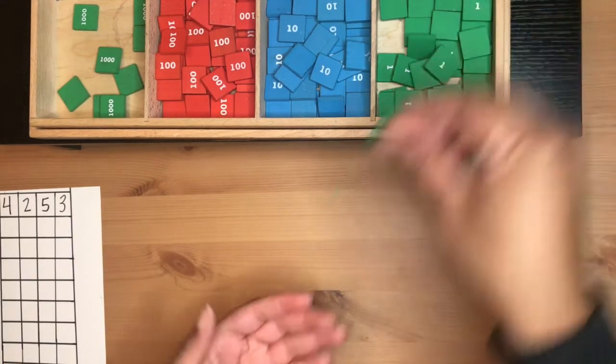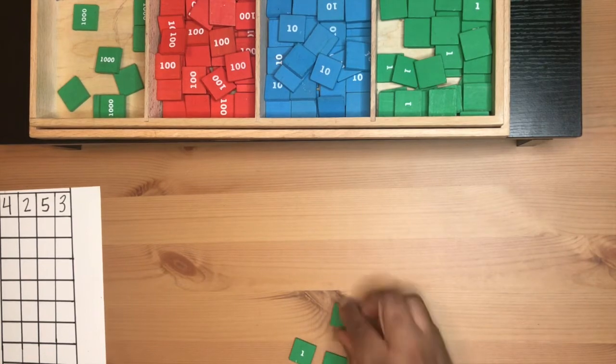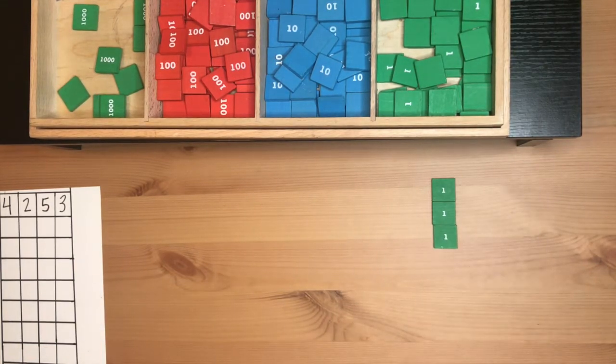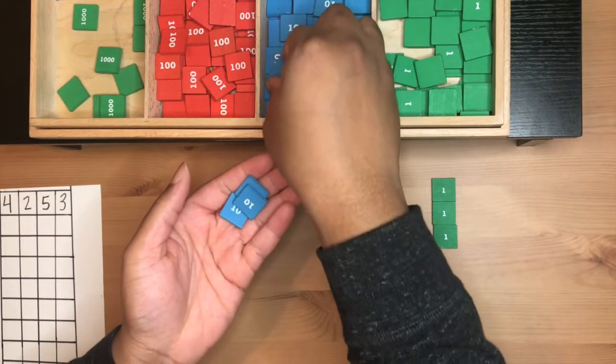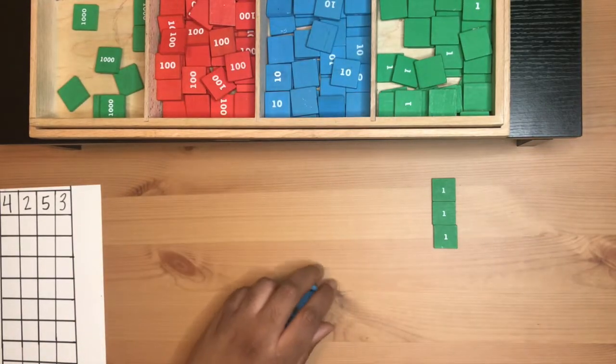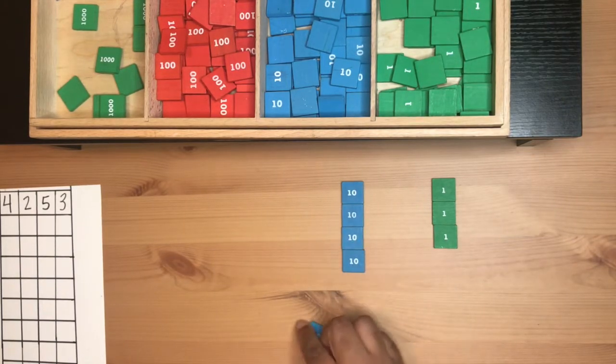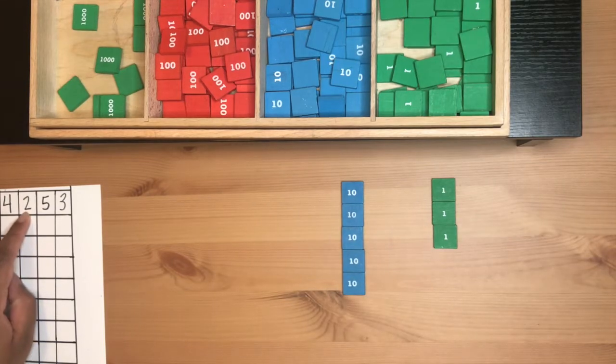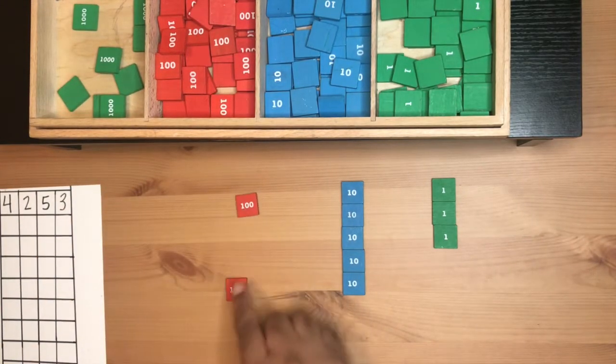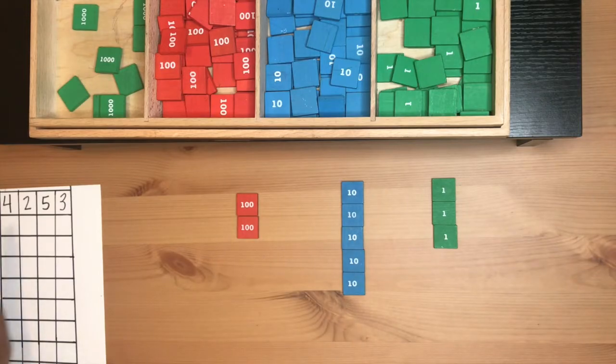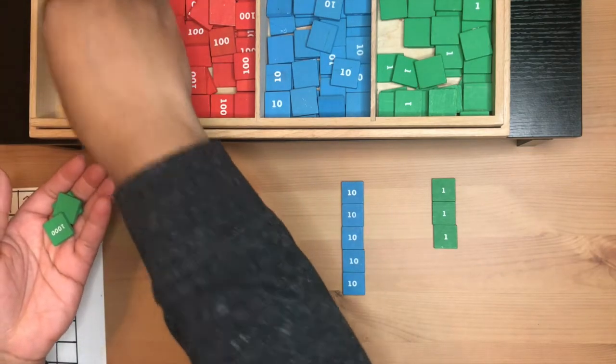Starting with the units, we need three units: one unit, two units, three units. Now we need five tens: one ten, two tens, three tens, four tens, five tens. Two hundreds: one hundred, two hundreds. Four thousands: one thousand, two thousands, three thousands, four thousands.